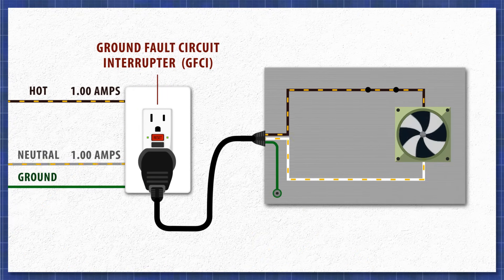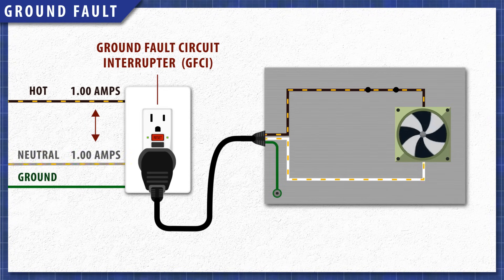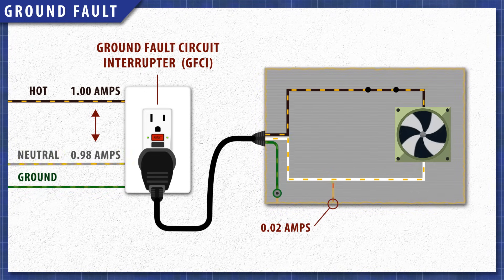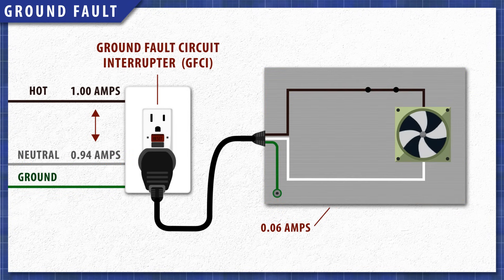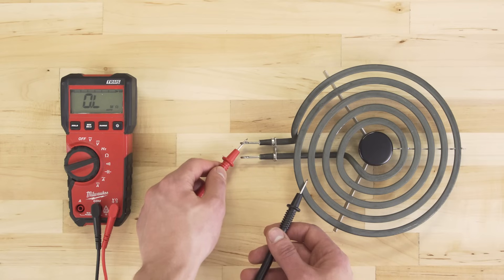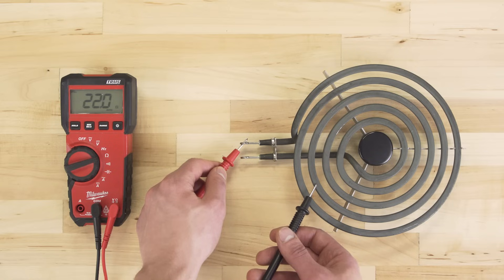To test if an appliance is shorted to ground, you can plug it into a circuit protected by a GFCI, or ground fault circuit interrupter. GFCIs monitor the current between the hot and neutral lines. If there is even a small amount of current leaking to ground, then the GFCI will trip, disconnecting power until it's reset. Components can also be tested for shorts. If the component has continuity between either terminal and the metal frame, then it's shorted to ground and will need to be replaced.